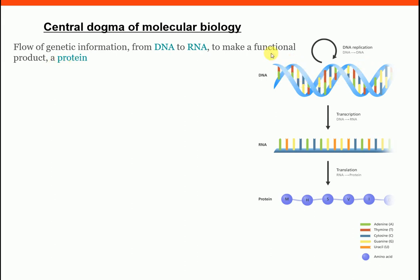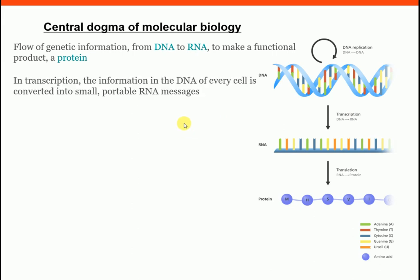DNA has a double helical structure. DNA can make a new copy of itself — this process is called replication, and it is facilitated by DNA polymerase. From DNA, an RNA is also formed, and this process is called transcription.